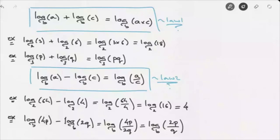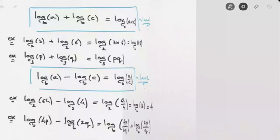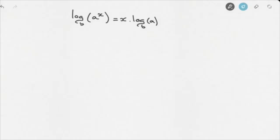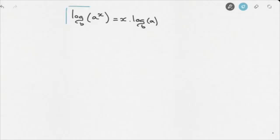The third law of logarithms that we need to know is the following. Given log base B of A raised to the power of x, this equals x times log base B of A. I'll box that result and call this Law 3.